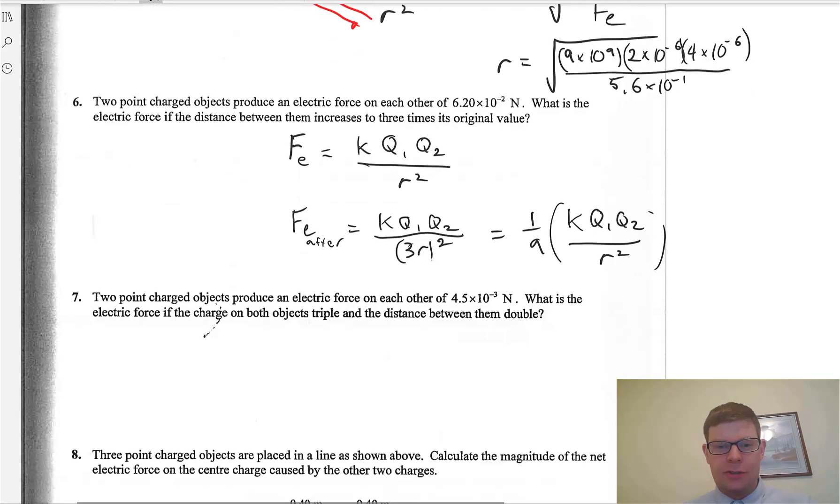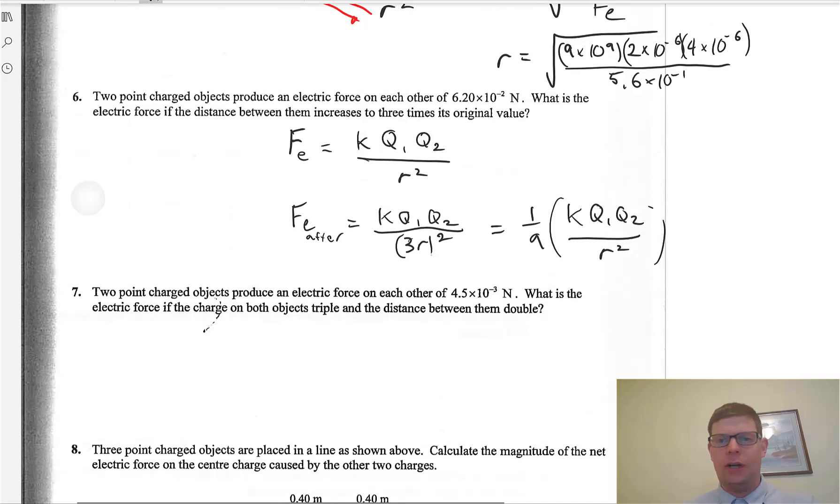So, think along those lines. And you can do a similar thing here. Oh, by the way, at this point, it's 1/9th whatever it was before. So, this is what it was before. So, take this number and divide it by 9, and you're done.